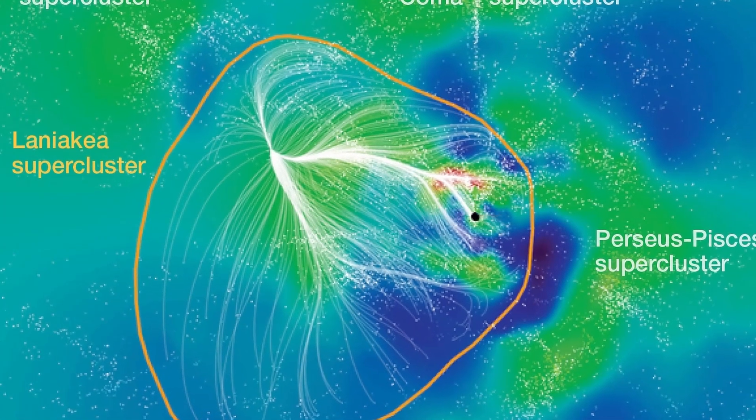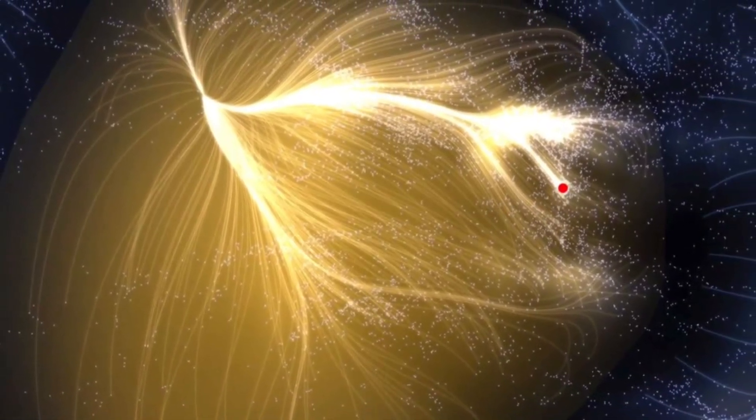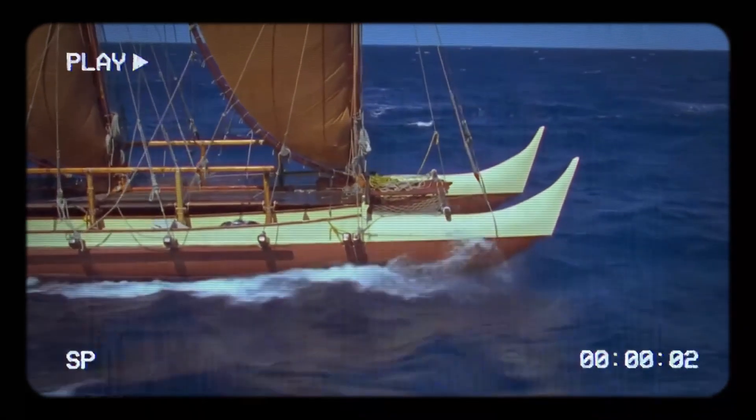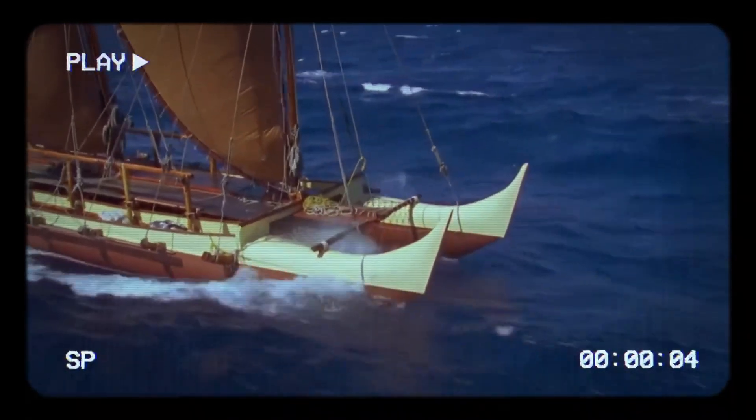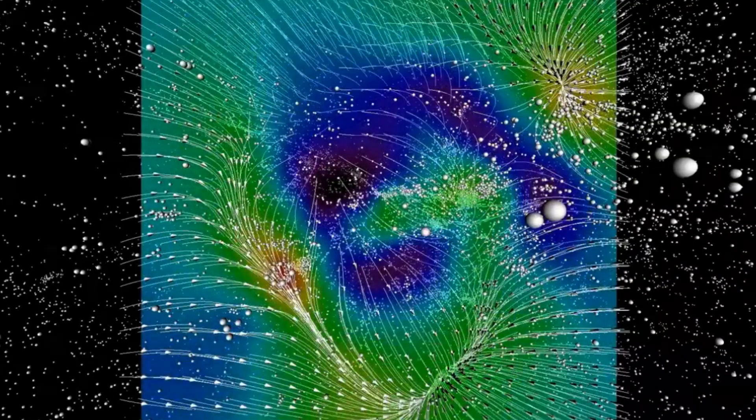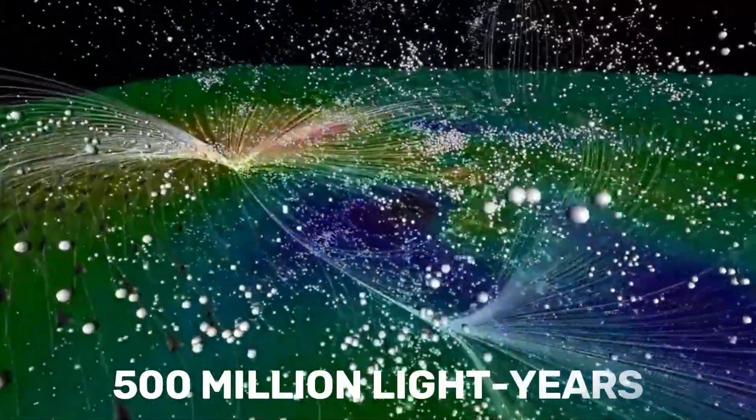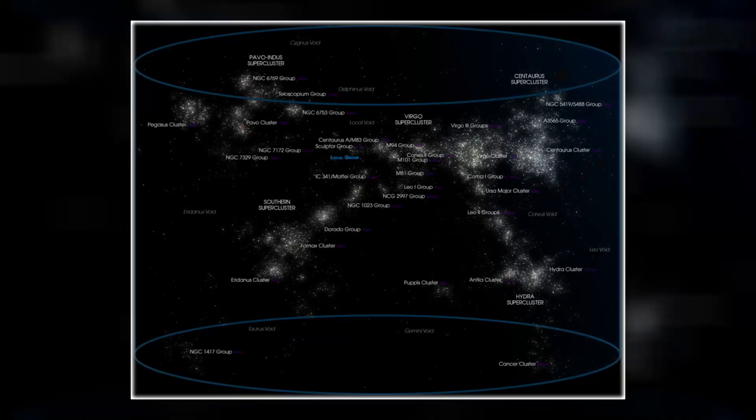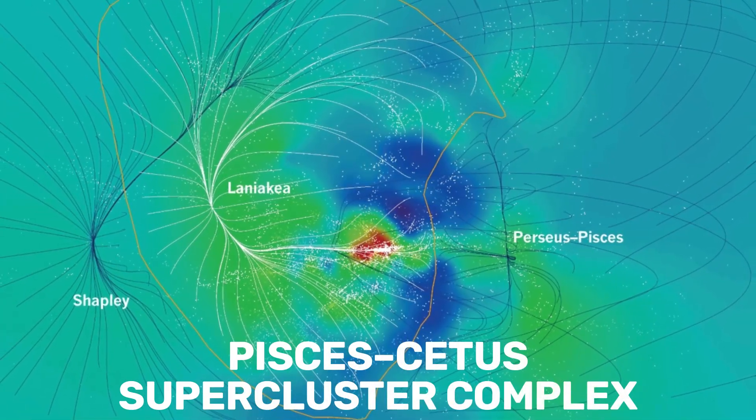Now, the Great Attractor is part of the Laniakea supercluster, which contains our Milky Way and many other nearby galaxies. The name Laniakea means immense heaven in Hawaiian and was chosen to honor the Polynesian navigators who used the stars to explore the Pacific Ocean. This supercluster encompasses approximately 100,000 galaxies stretched over 500 million light years. It has a complex web-like structure with dense regions connected by filaments and surrounded by voids. The Laniakea supercluster is part of the larger Pisces-Cetus supercluster complex, one of the most massive superclusters known in the observable universe.